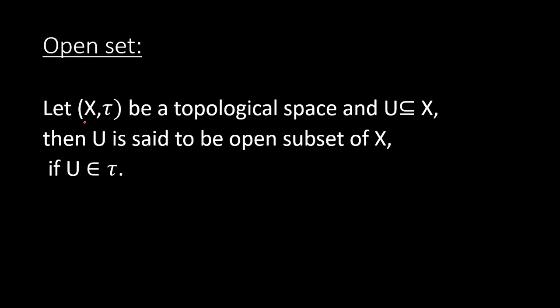If we let X and τ be a topological space and U be a subset of X, then U is called an open set or open subset of X if U belongs to τ. Whenever we take an open subset of X, it means that subset is from topology τ — all subsets that belong to τ are called open subsets.